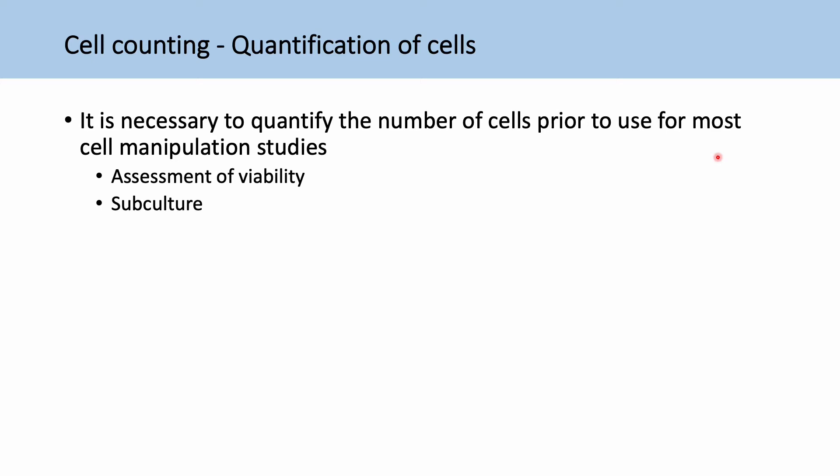It's important when we're subculturing our cells that we reseed the optimal amount of cells back into a new flask for the best growth. When we're doing experiments like transfections or stainings, it's important to know the cell numbers so we can add in the appropriate amount of reagent.